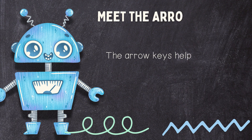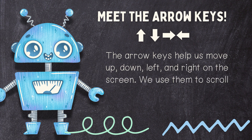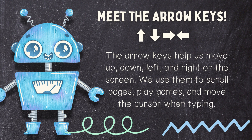Meet the arrow keys. The arrow keys help us move up, down, left, and right on the screen. We use them to scroll pages, play games, and move the cursor when we're typing.